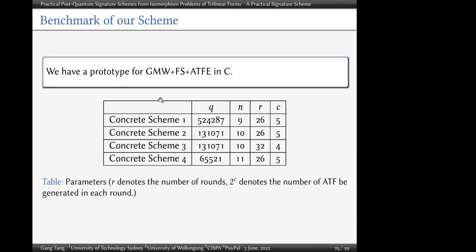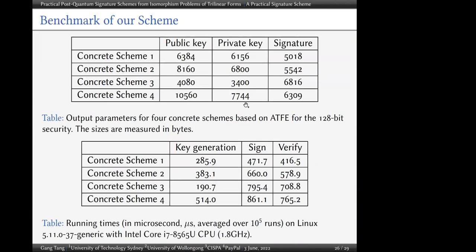We have an implementation of our scheme with four concrete parameter sets. For each, we choose specific values of q, n, r, and s, and compute the resulting public key size, private key size, and signature size. We also measure the running times for key generation, signing, and verification.